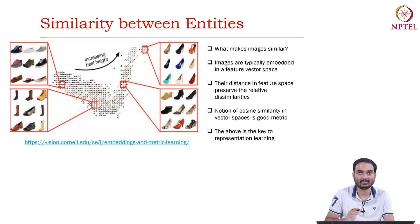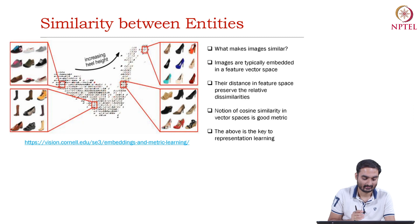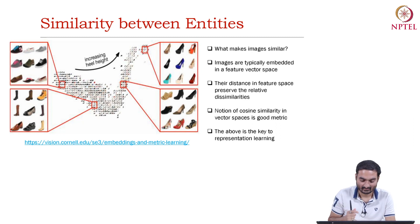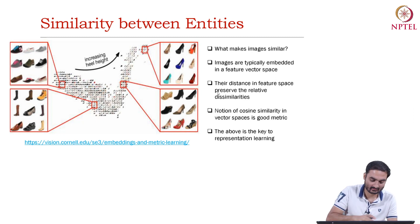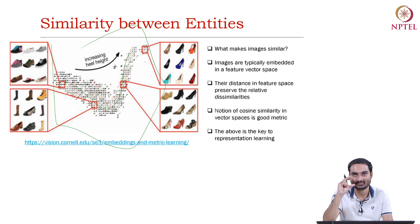The major issue is how do we come up with similarity — similarity between entities while doing representation, while coming up with a better representation. You basically want that based on some notion of similarity of products, you can have representations. For example, you see here different shoes and their representations in an embedding space. These entities are arranged in an increasing heel height order — heel of the shoe — and these items are grouped accordingly.